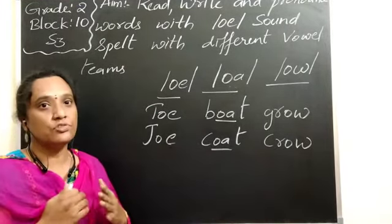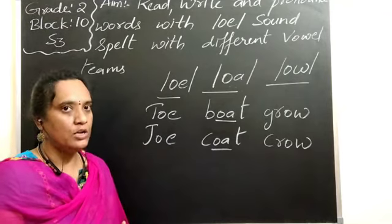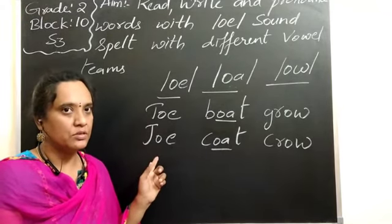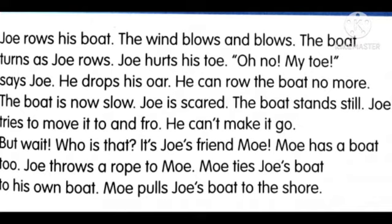Now let us read and pronounce them from our textbook lesson, and also write them in our workbook. Now let us open our textbook. Children, let us read and pronounce the O-sound words from page number 63. The title is 'Joe and his boat,' where you can see the vowel pairs O-A, O-E, and O-W giving the same sound. Let us read and pronounce: 'Joe rows his boat. Joe rows his boat.' So we can see Joe is rowing his boat.